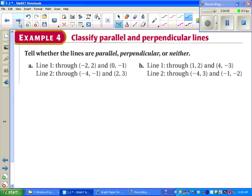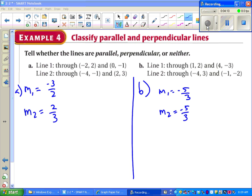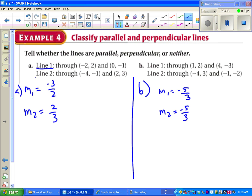This next example tells us to figure out whether the lines are parallel, perpendicular, or neither. To figure that out, we need to find the slope of each line. So we'll do that first. After we find the slope of each line, my M1 means slope of line 1. M2 would mean slope of line 2.